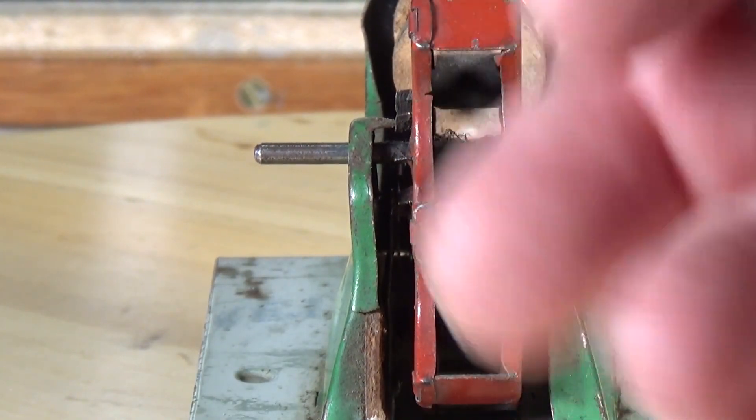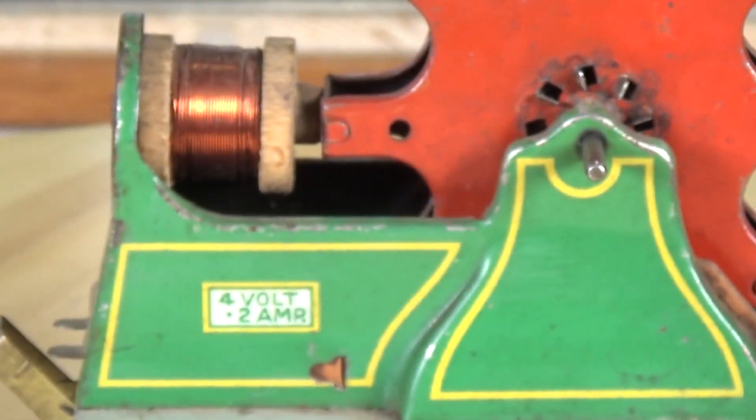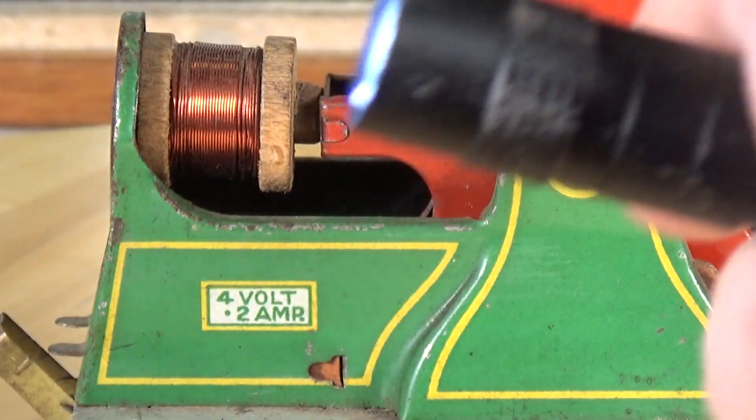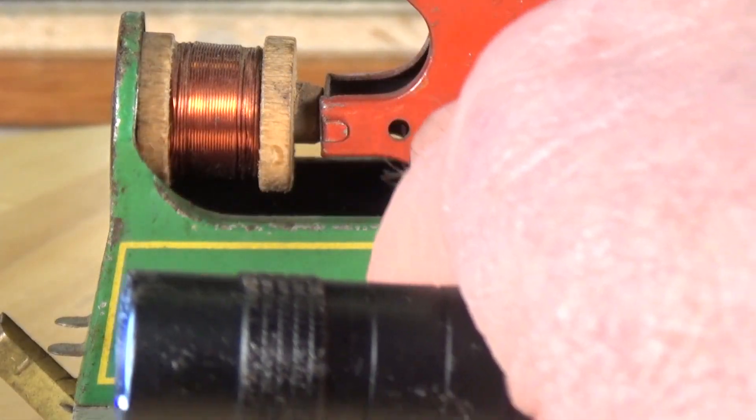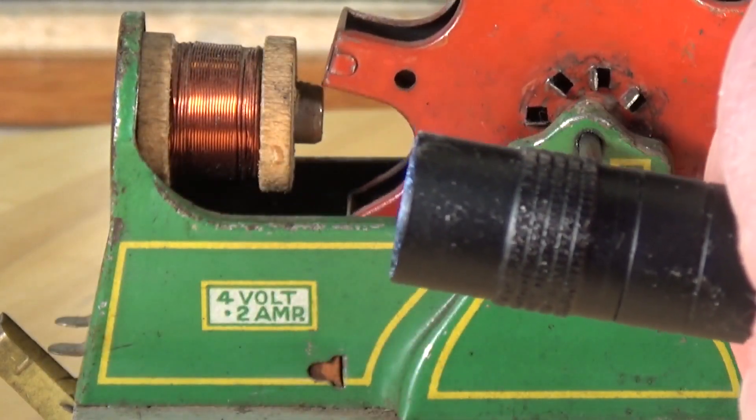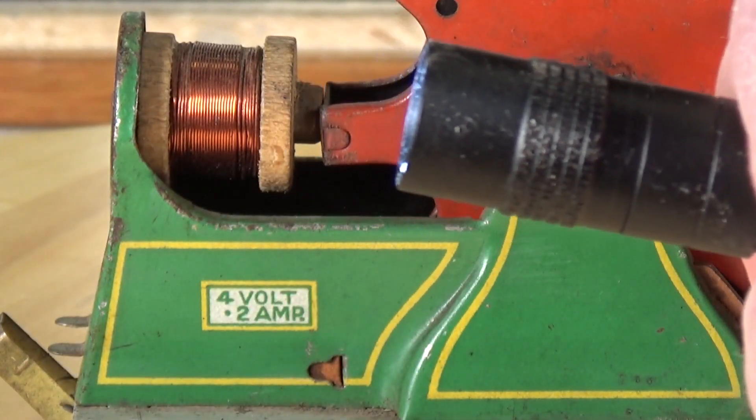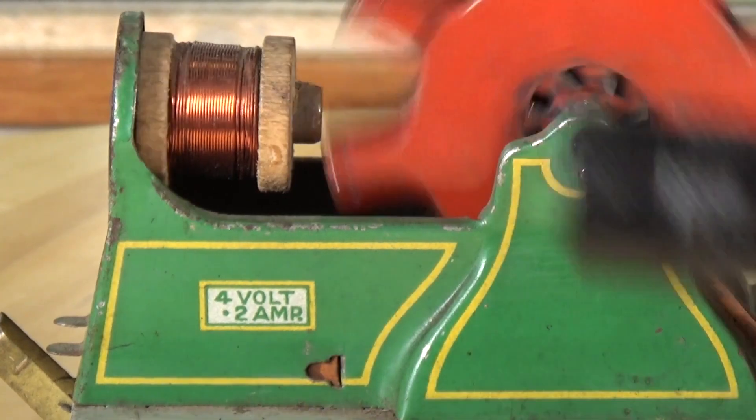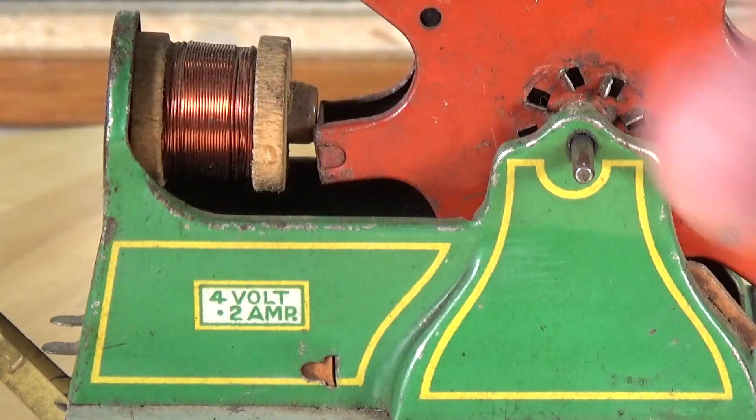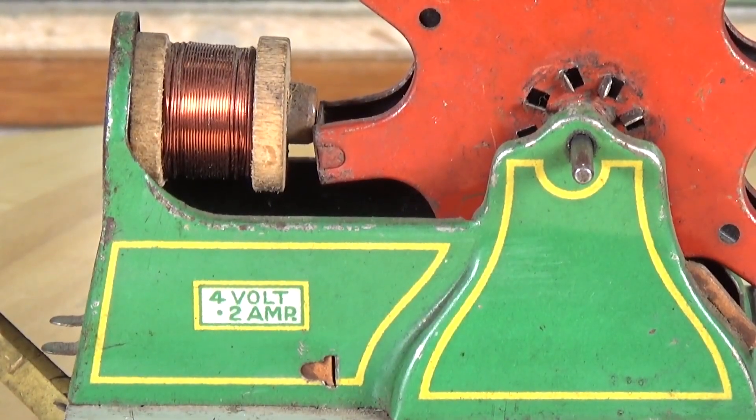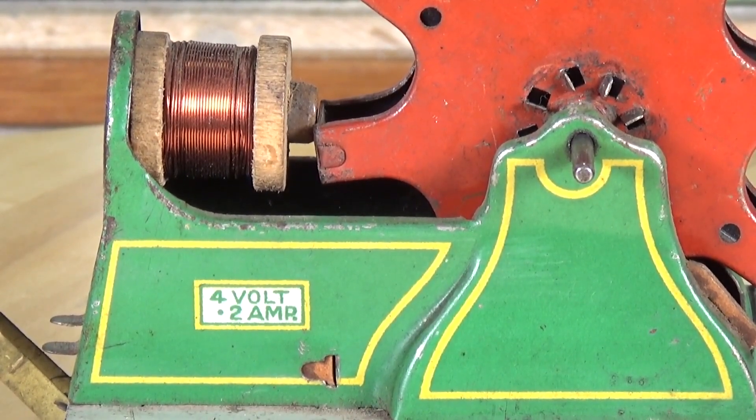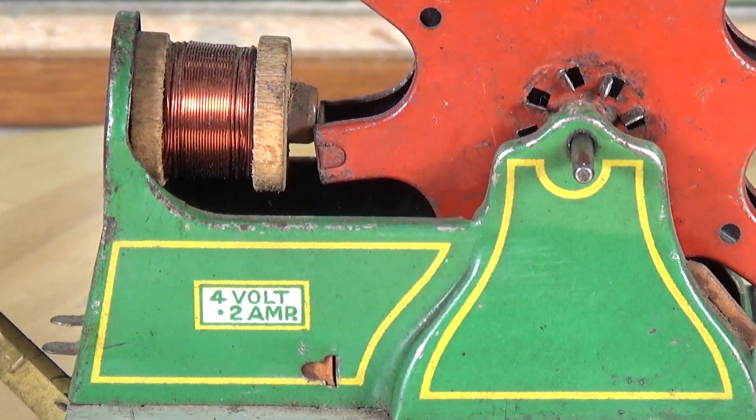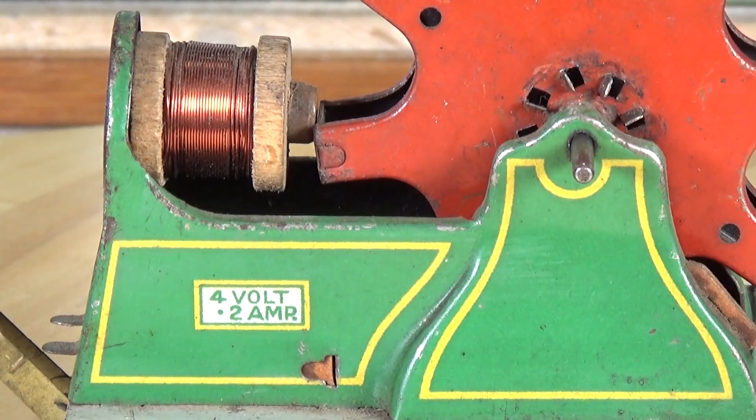And basically, they make contact with the flywheel when one of these parts is in line with the electromagnet. As soon as they do, and this moves, they break contact until the next one lines up. And so basically, what happens is you get rotational motion due to the contactor breaking and making on these little tabs which are on the flywheel.